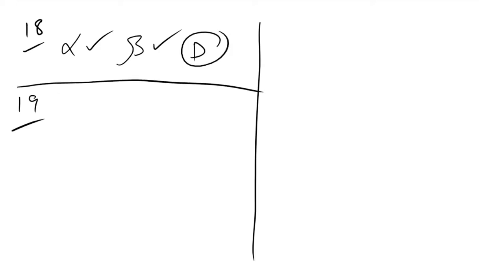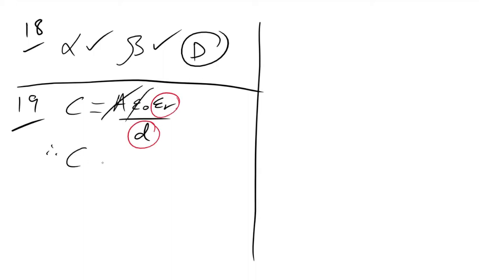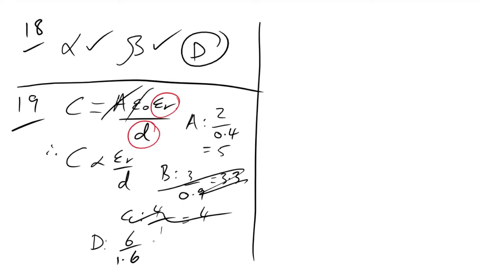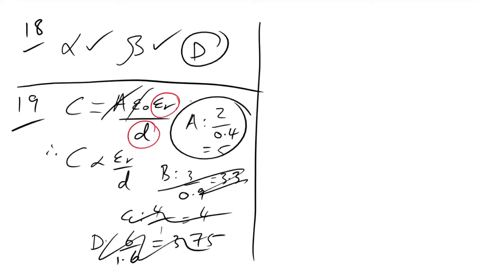Question 19: parallel plate capacitor — what gives the greatest capacitance? C = Aε₀εᵣ/d, so C ∝ εᵣ/d. Calculating for each option: A → 2/0.4 = 5, B → 3/0.9 = 3.3, C → 4/1 = 4, D → 6/1.6 = 3.75. Option A gives the highest value. The answer is A.